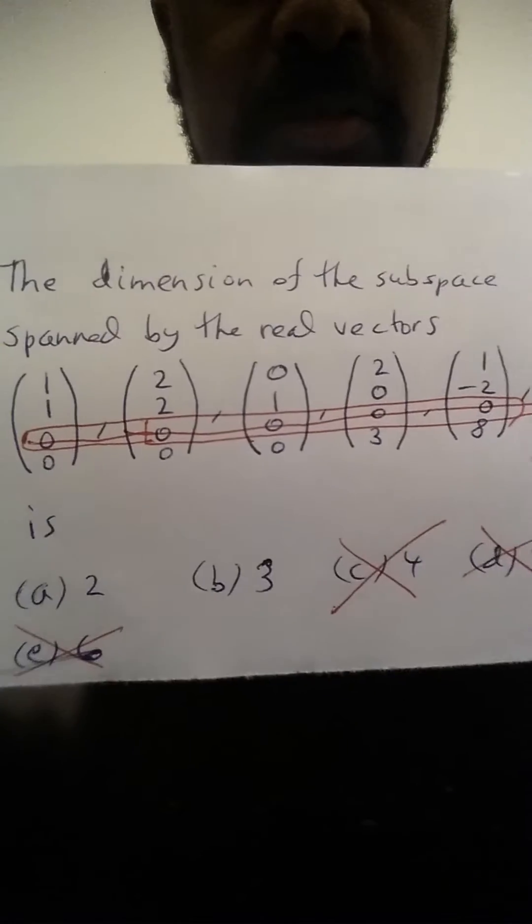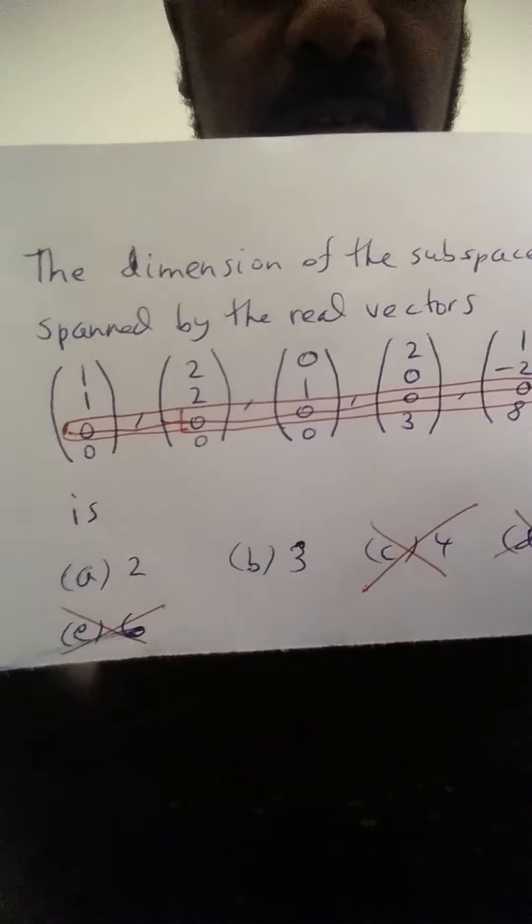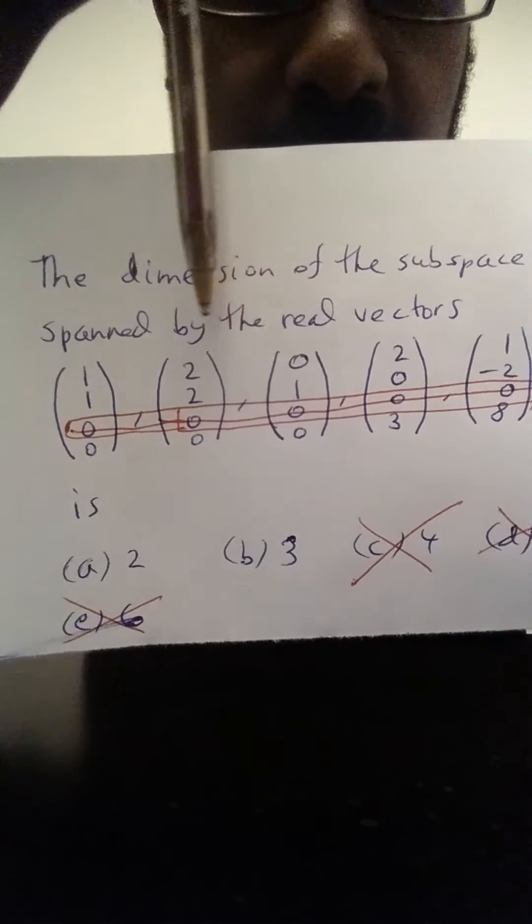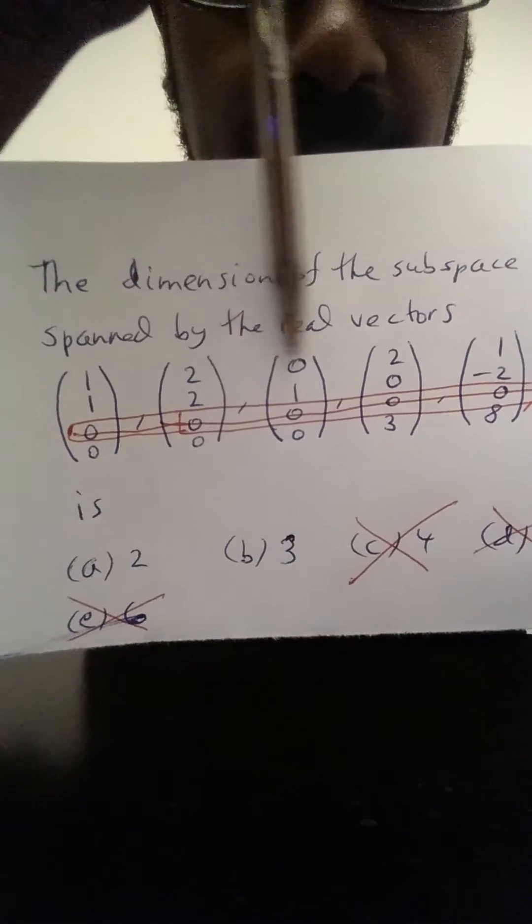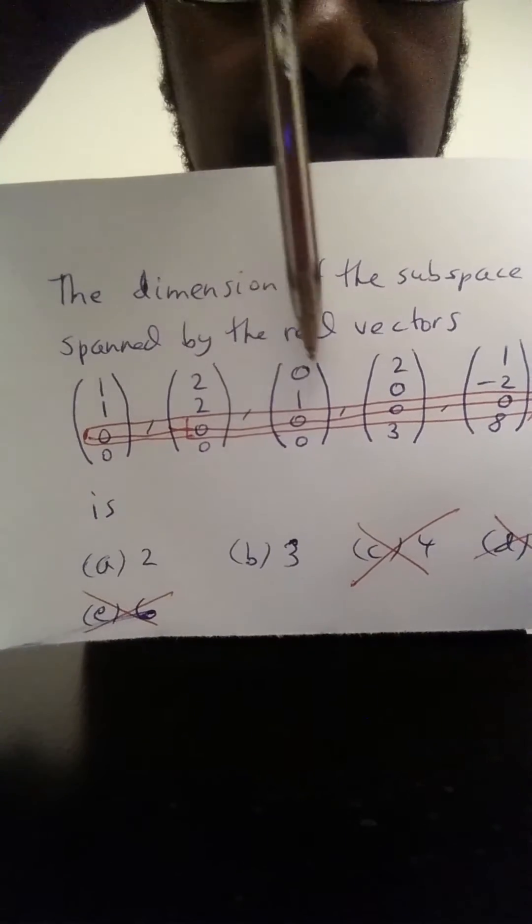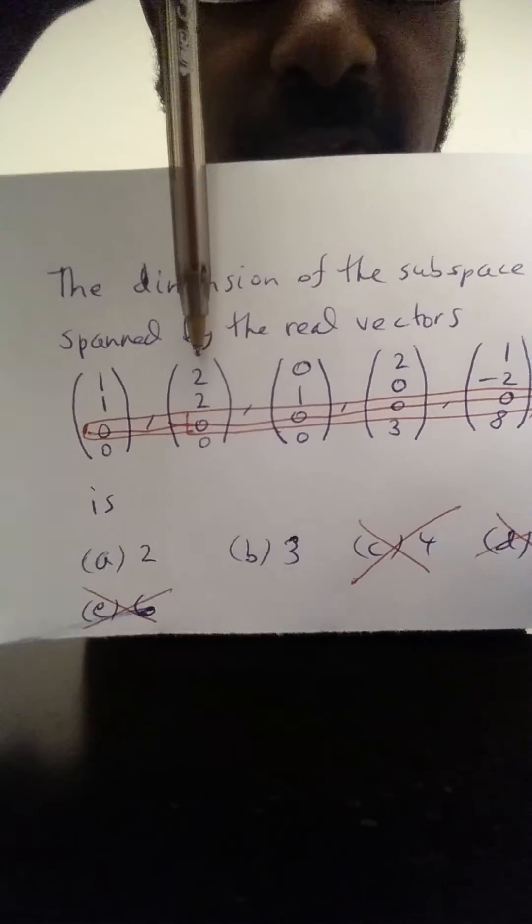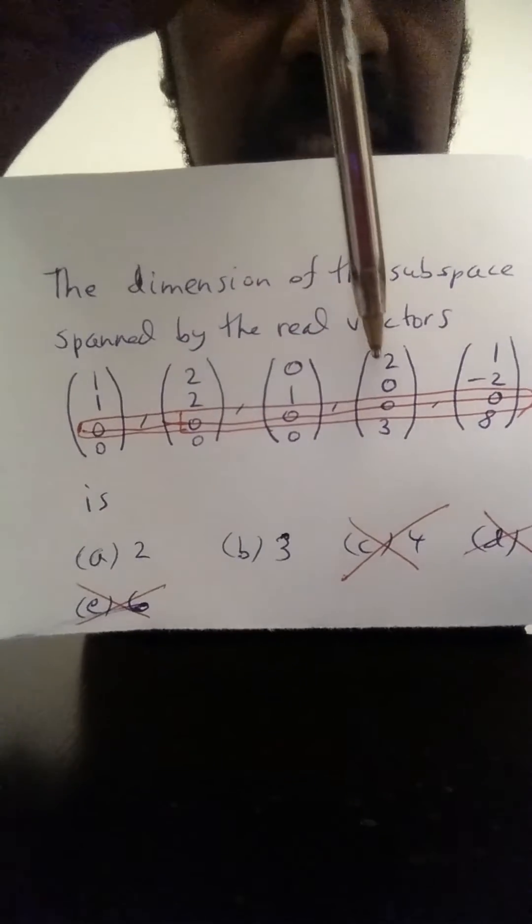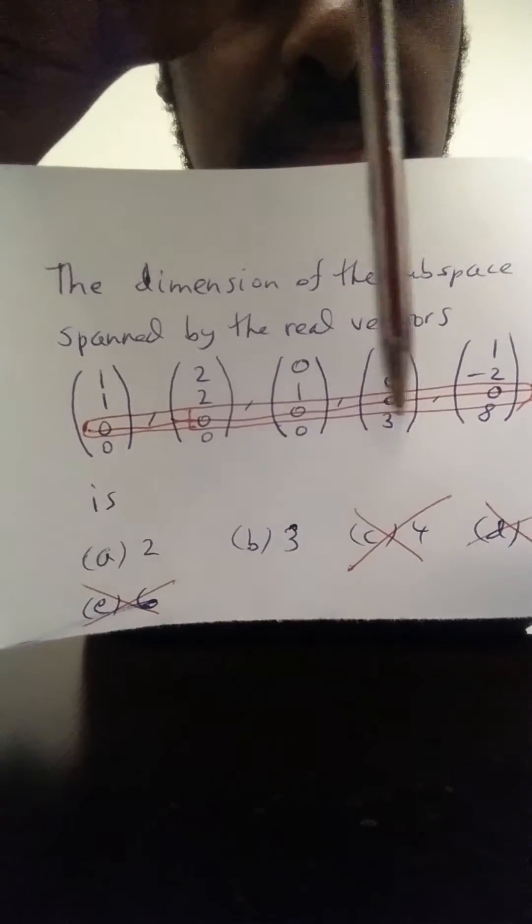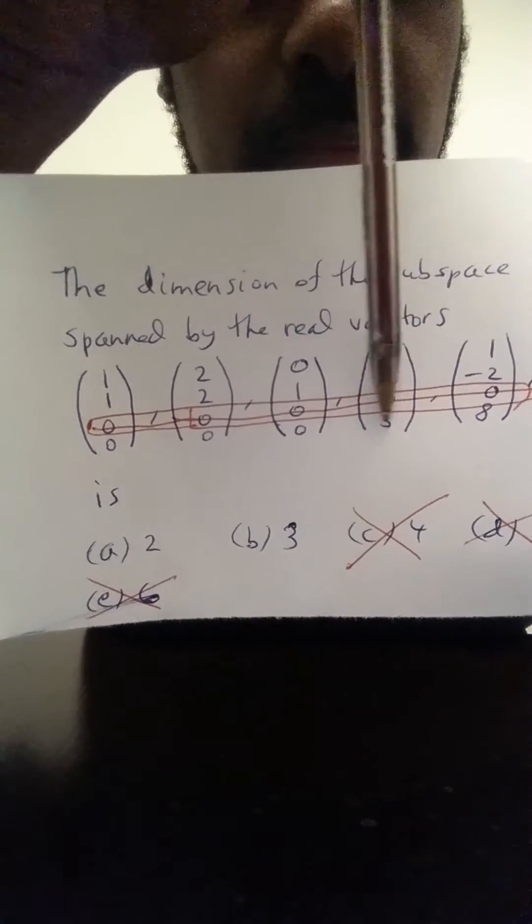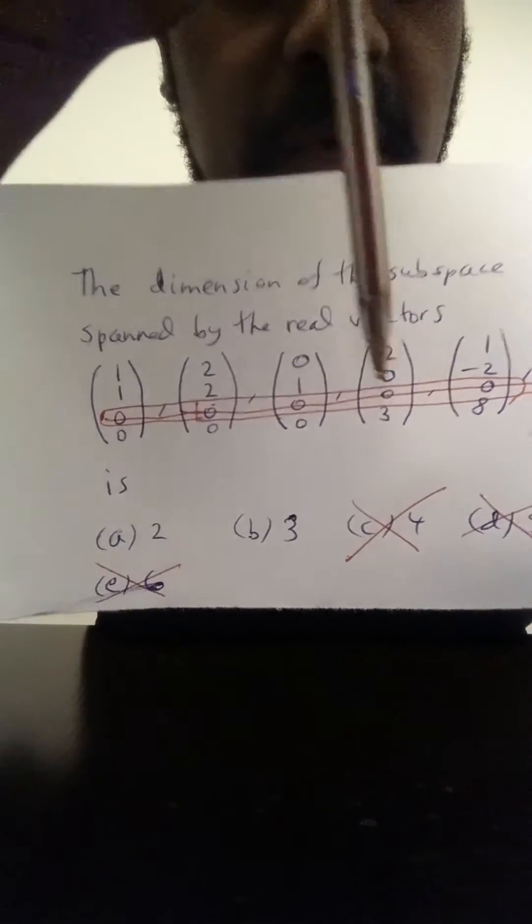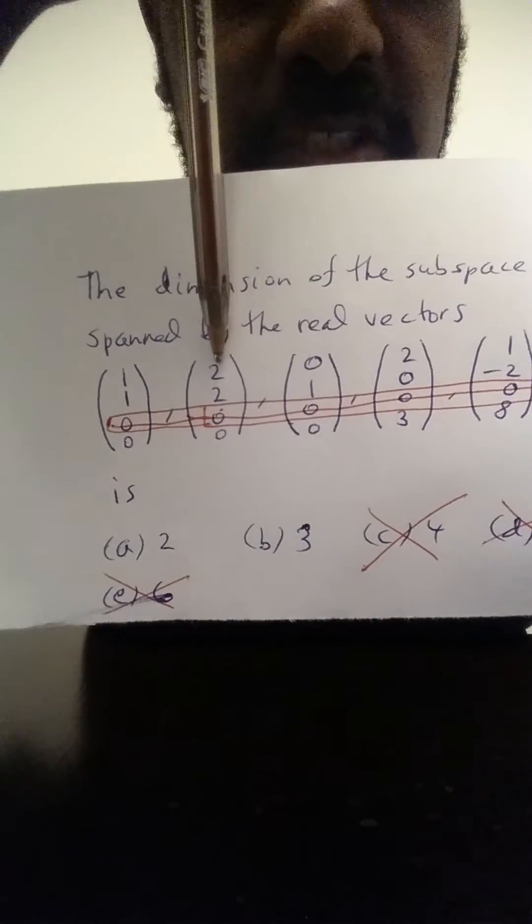So what happens with the rest of these vectors? Well, observe that this vector and this vector are linearly independent, they form a linearly independent set. One is not a scalar multiple of the other. And furthermore, since this vector here has a non-zero component at the bottom, namely the last component is non-zero, whereas these two are zero, then this vector can't be written as a linear combination of these.